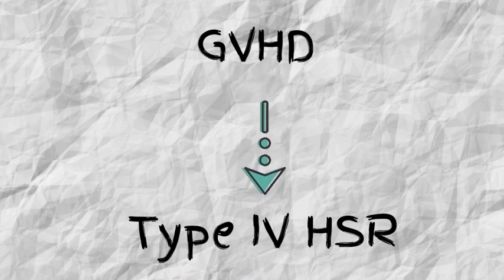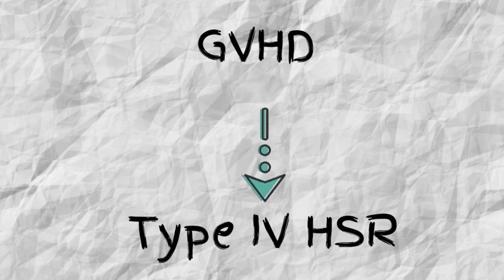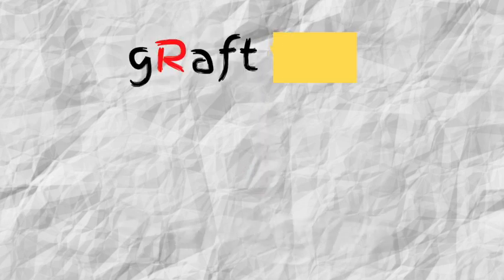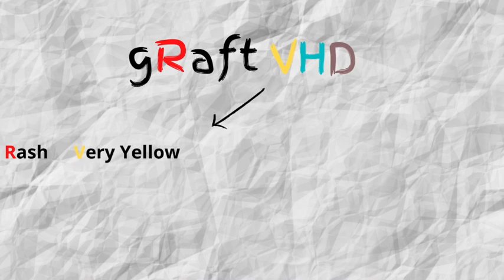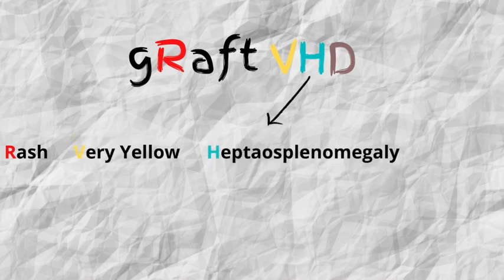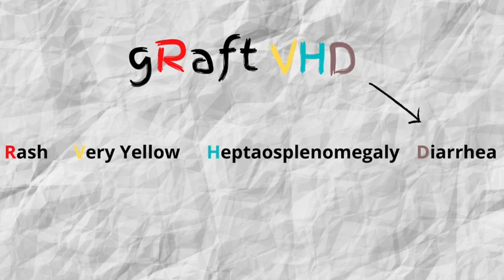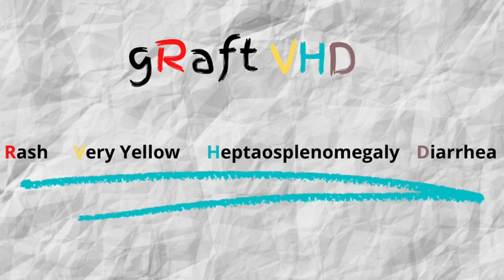To remember the symptoms of GVHD, use the letters in 'graft versus host disease': R for rash, V for 'very yellow' meaning jaundice, H for hepatosplenomegaly, and D for diarrhea. Because the graft attacks the host, it can attack basically everything, so patients may also present with abdominal pain. If a post-transplant patient has jaundice, diarrhea, a rash, or abdominal pain, consider graft-versus-host disease.